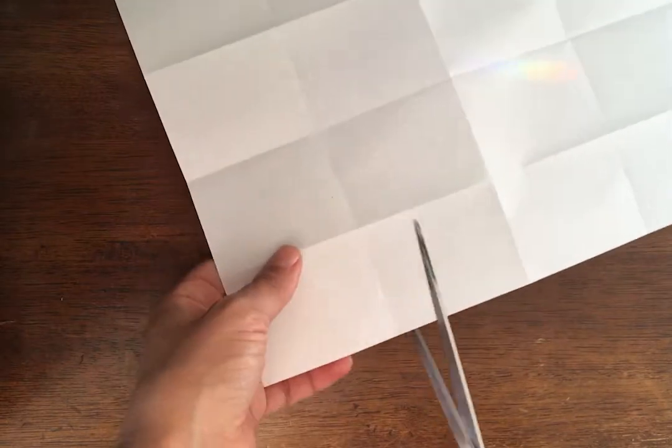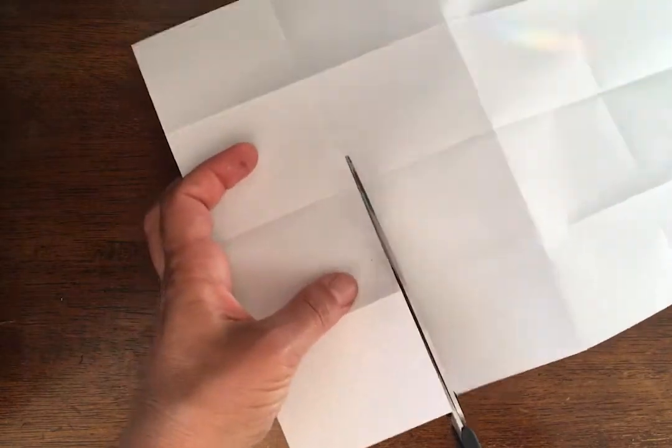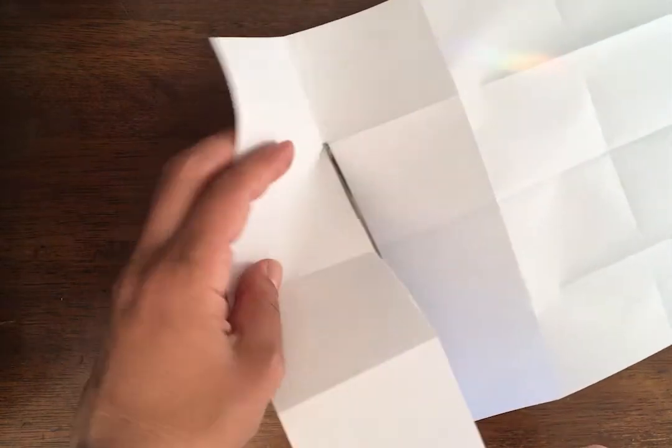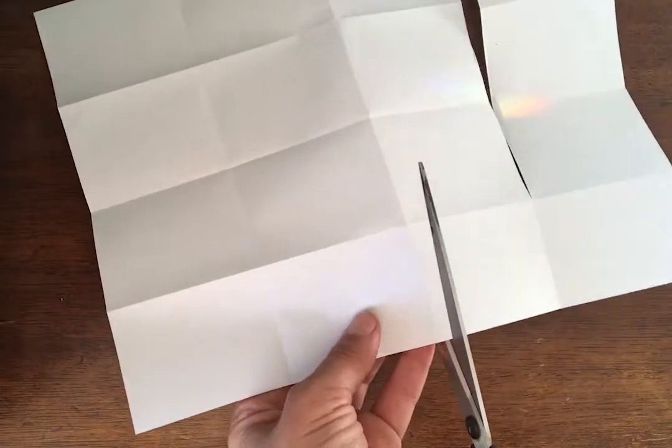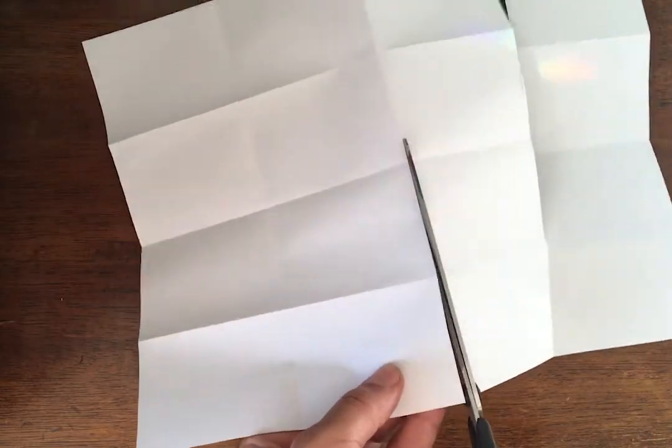And then, I'm going to take my scissors, and I'm going to cut across three panels, leaving the fourth one attached. Then it comes on the other side, and I'm going to cut these three panels, and leave the fourth one attached.